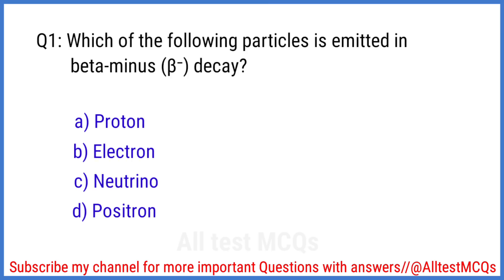Q1. Which of the following particles is emitted in beta minus decay? The right answer is option B. Electron.